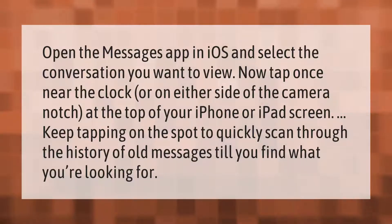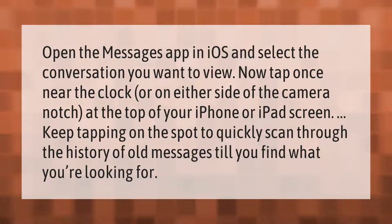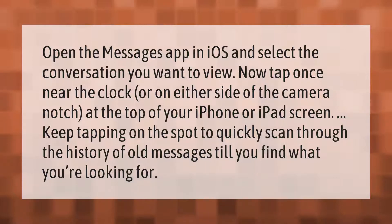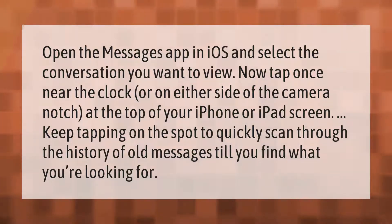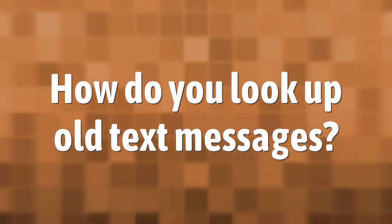Open the Messages app in iOS and select the conversation you want to view. Now tap once near the clock or on either side of the camera notch at the top of your iPhone or iPad screen. Keep tapping on that spot to quickly scan through the history of old messages until you find what you're looking for.